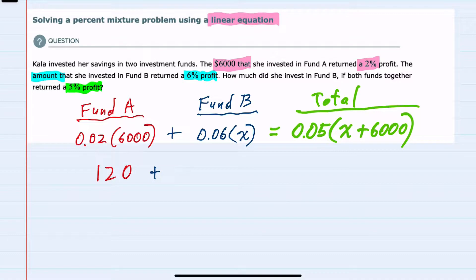Plus 0.06X equals, on the right-hand side, I would want to distribute to get rid of the parentheses. So 0.05X plus 0.05 times 6,000 would give me 300.